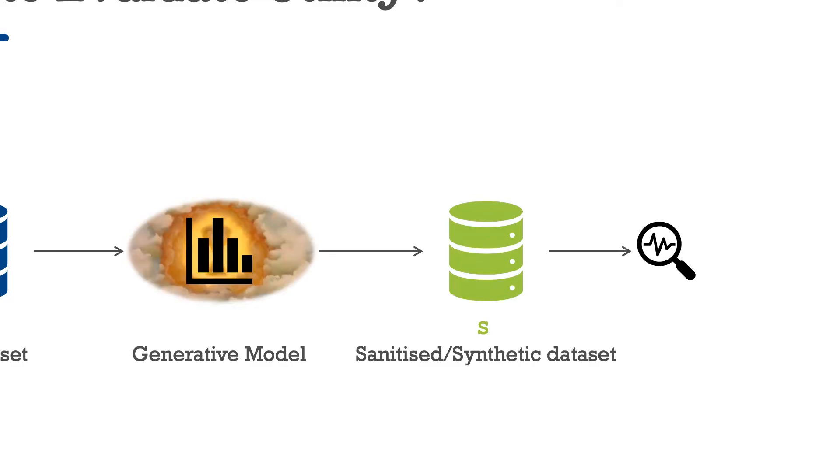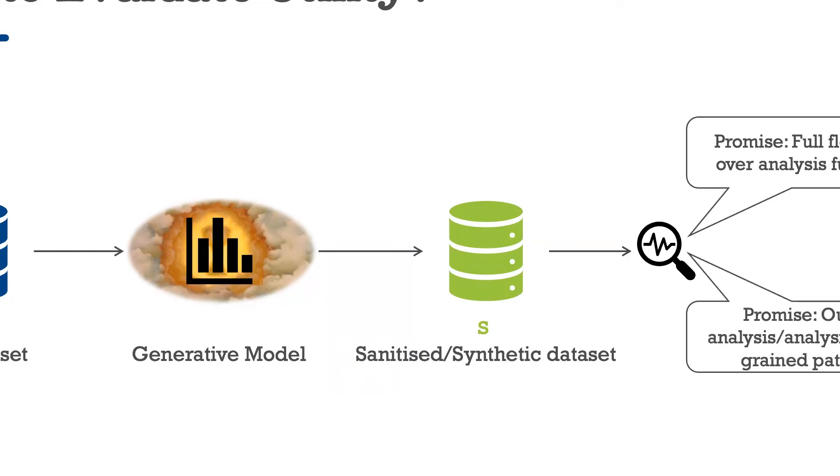To answer this question, we again first have to look at what is the desired function of synthetic data. As we discussed before, synthetic data is advertised as a novel data anonymization solution that enables data holders to publish data sets that can act as a replacement for the raw or anonymized data. The promise of synthetic data is that it preserves all the benefits of micro data publishing that is full flexibility over the analysis functions that we evaluate over the data, as well as to allow us the statistical analysis of fine grain patterns such as outlier analysis that might be hard to achieve with other types of data releases.